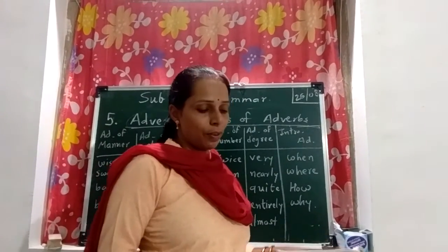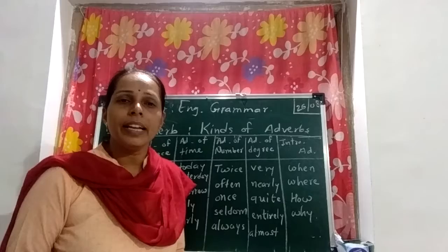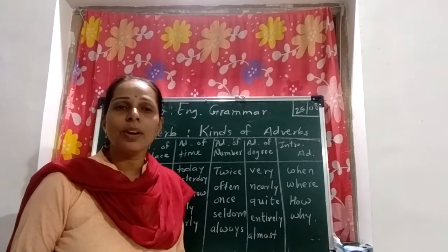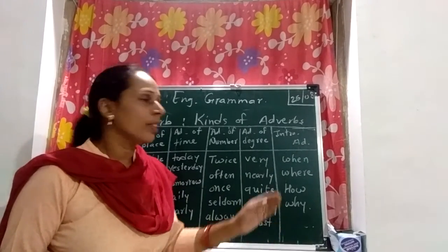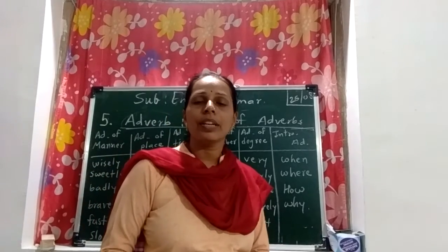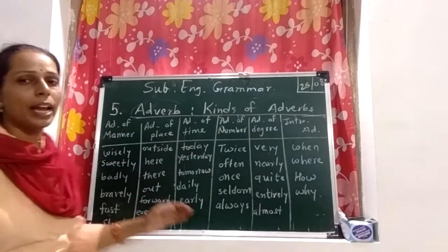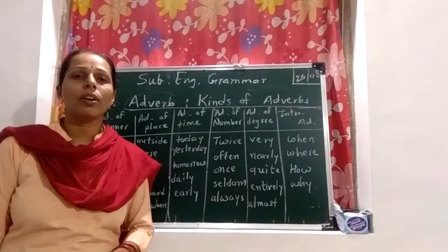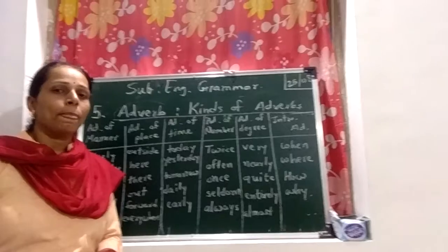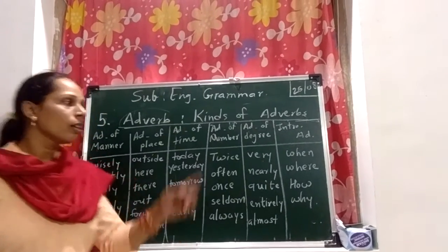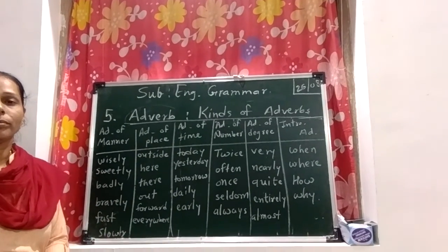The sixth kind is the interrogative adverb. These are: when, where, how, and why. For example: when did he come? Where did he go? Why are you late? Adverbs used to ask questions are called interrogative adverbs. Today we have learned about adverbs and the kinds of adverbs. I hope you have understood well. If you have any query, you can ask me. You have to write the definition and this table in your notebook. Thank you.